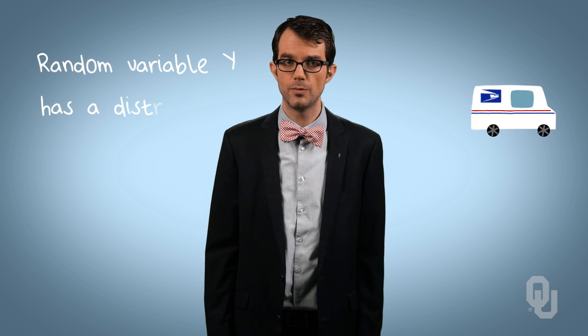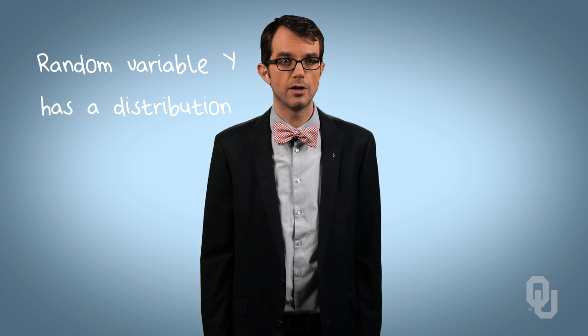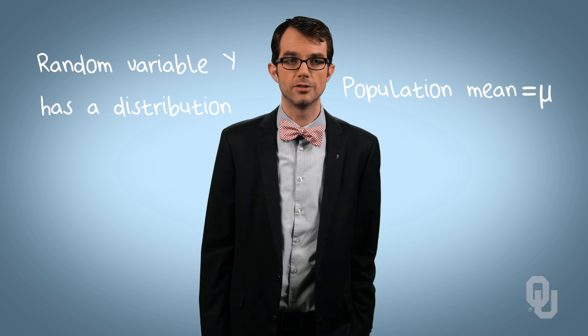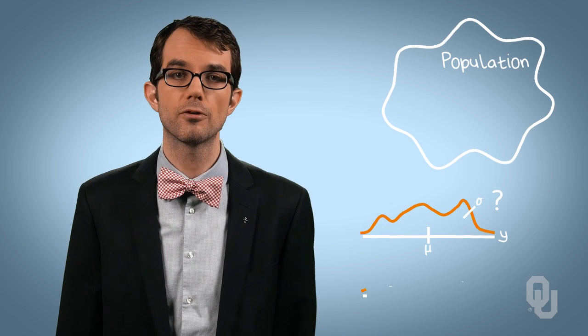Before we go much further, let's discuss some notation. Let y be a continuous random variable describing a value of interest, for example, the height of adult males, or the time it takes for a postal carrier to complete her route. Random variable y naturally has a distribution, and that distribution, which describes the population of the phenomenon described by the random variable, has a population mean, mu. We usually don't know much about this population — we know that it exists and we know that mu exists, but we don't know what the shape of the distribution looks like, or what its parameters are.